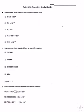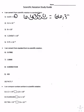Number one, you're going to move the decimal four times — one, two, three, four — and your answer is 66,350.